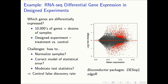On the x-axis is the average expression. On the y-axis is the difference in log-fold change between gene samples from one treatment group and samples from another. We're interested in those genes, highlighted in red, that are differentially expressed between our treatment and control group.